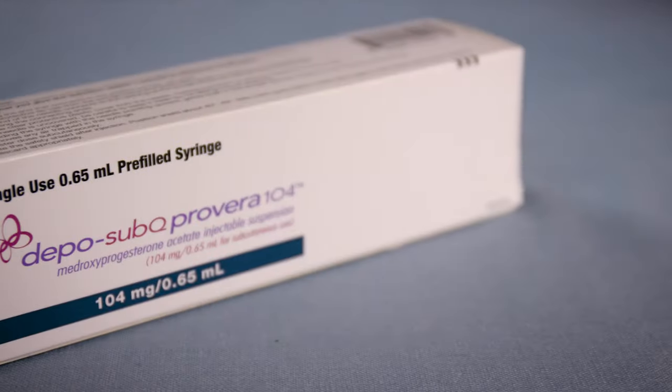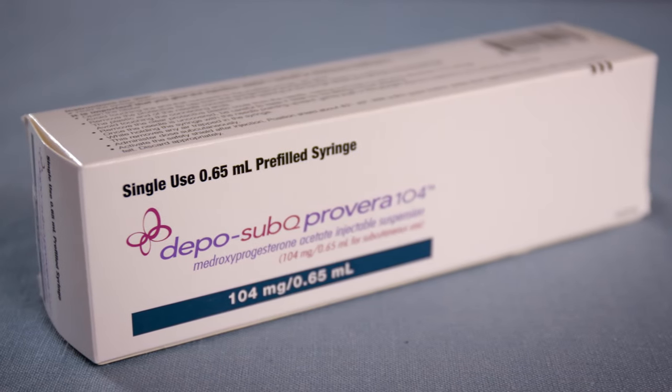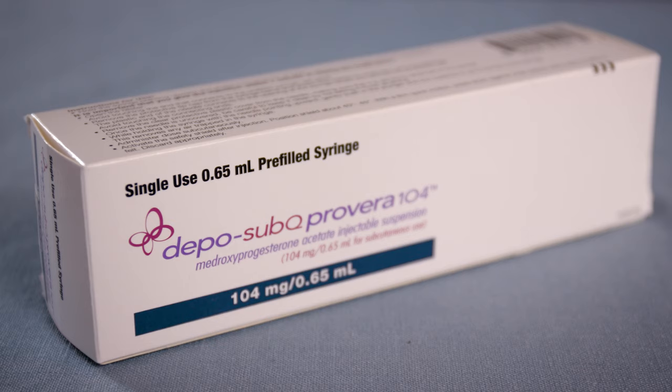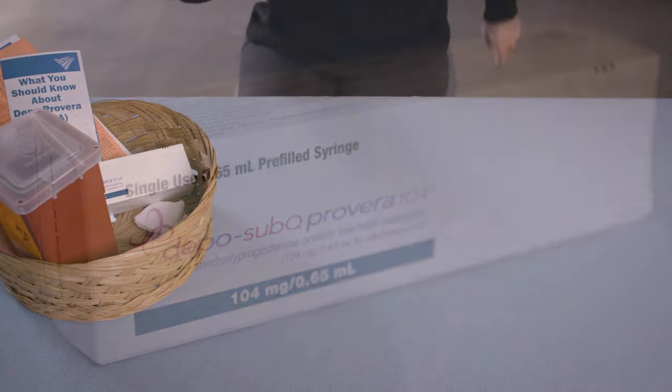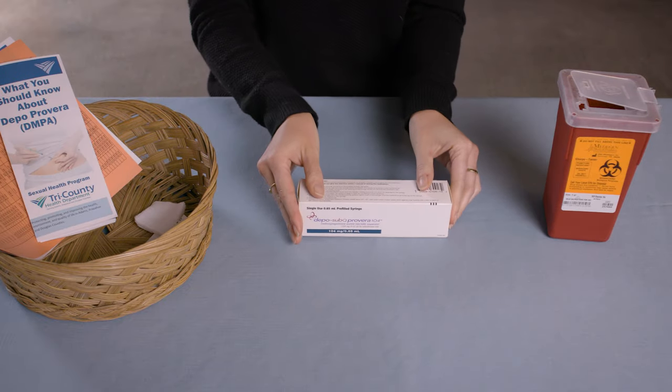Depo-SubQ is the birth control that you give to yourself at home every 12 to 14 weeks. The SubQ in Depo-SubQ is short for subcutaneous, which means under the skin. Depo-SubQ is made of the same medication in the shot you would receive at the clinic, but it's given differently.